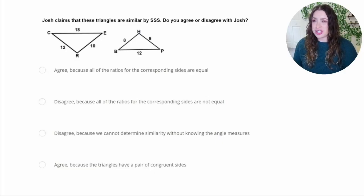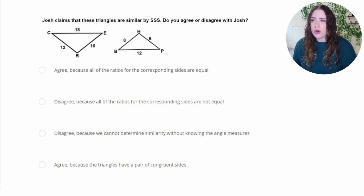All right, let's take a look at this question. Josh claims that these triangles are similar by SSS. Do you agree or disagree with Josh? So this is asking for similar triangles. It's important to remember the difference between similar and congruent. So similar figures have the same shape, but could have different sizes so long as they're proportional.